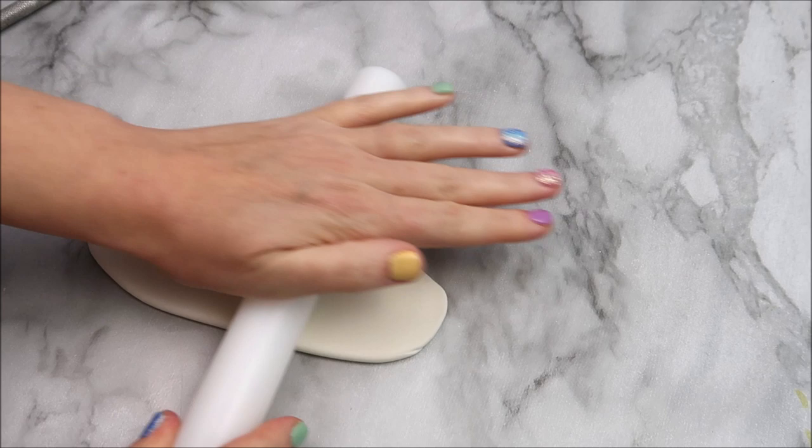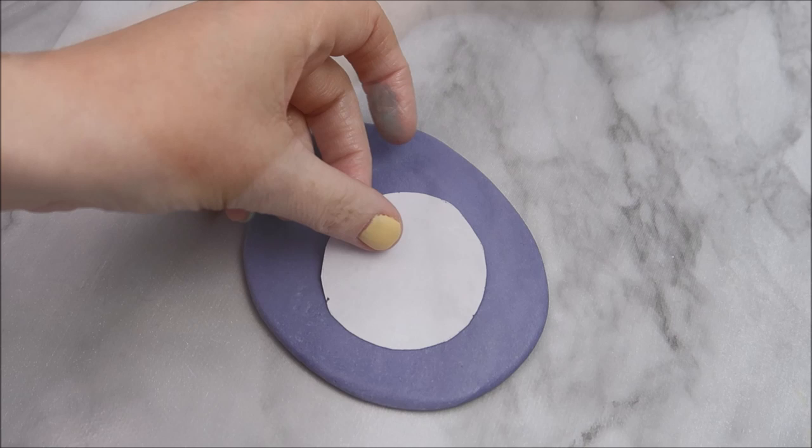You're going to start out by rolling out some modelling paste about 5mm thick and leave it to the side to dry a little bit while we make our paint pot.